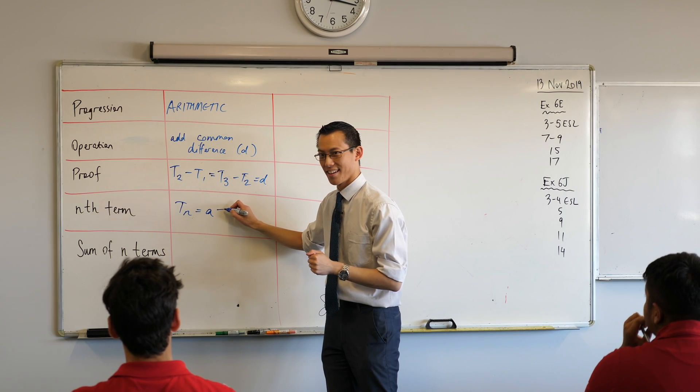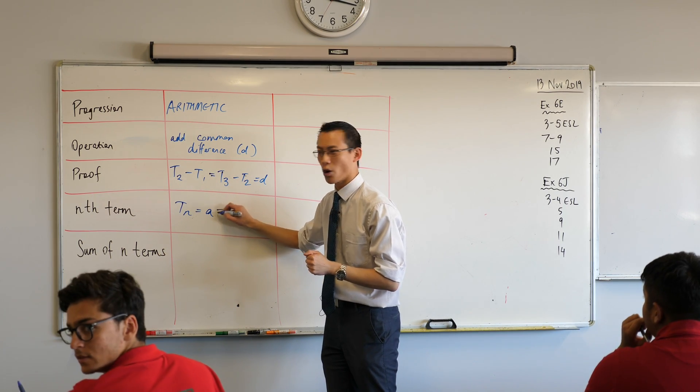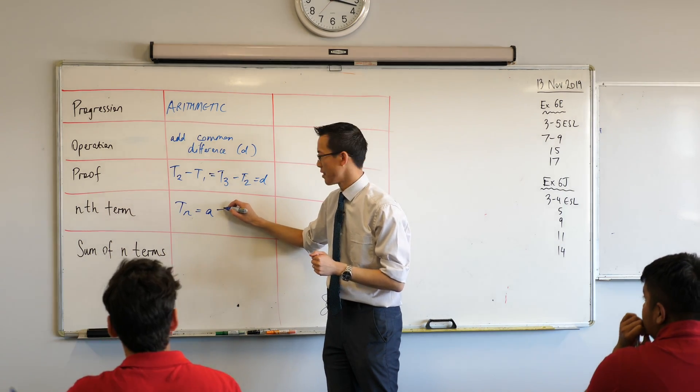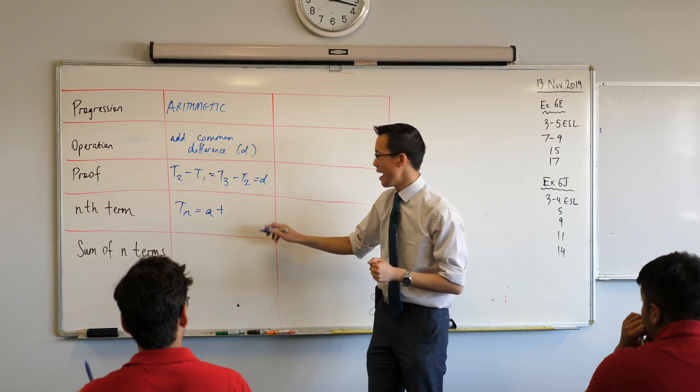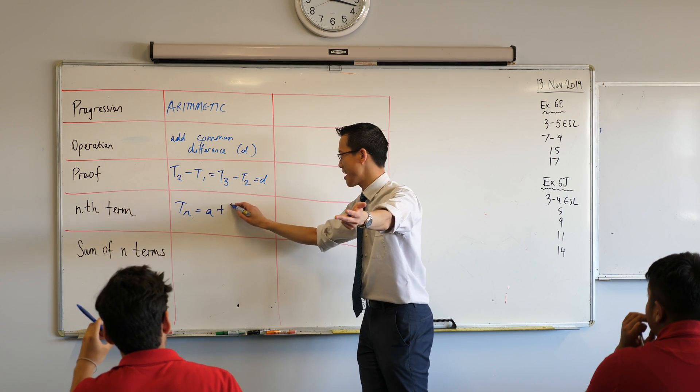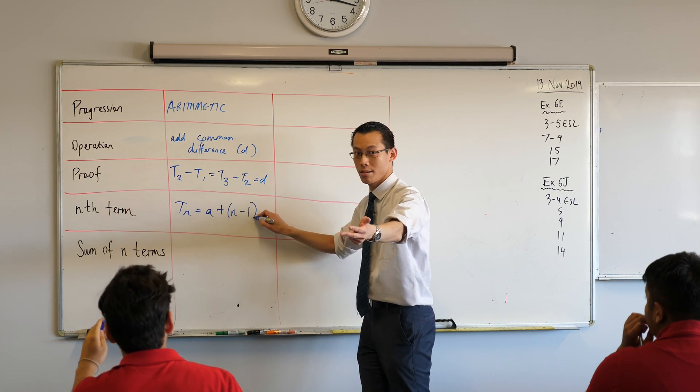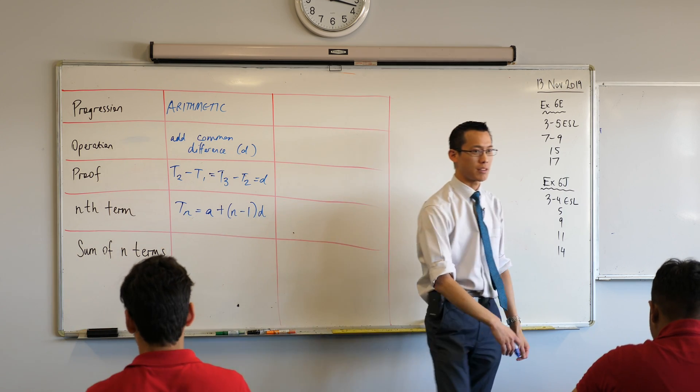It's a bracket N. Yeah, what operation do we need here? It's a plus sign, right? It's a plus sign. And then what's with the N's, right? N minus 1. Times that common difference. Okay, do you remember that?